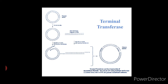The rate of reaction using this enzyme depends on the inclusion of magnesium ion, molybdenum ion, or cobalt ion in the reaction mixture. Now let us understand the application of terminal transferase.